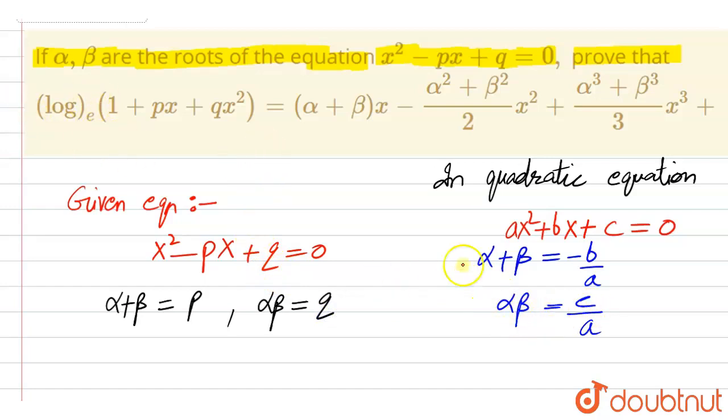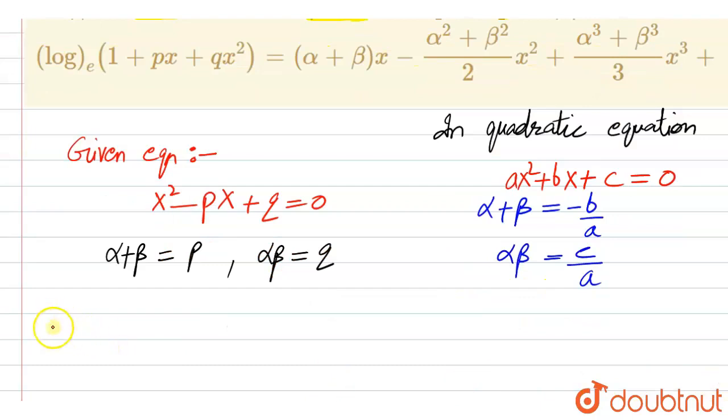So what do we need to prove here? We need to prove that log to the base e of 1 plus px plus qx squared should be equal to alpha into beta.